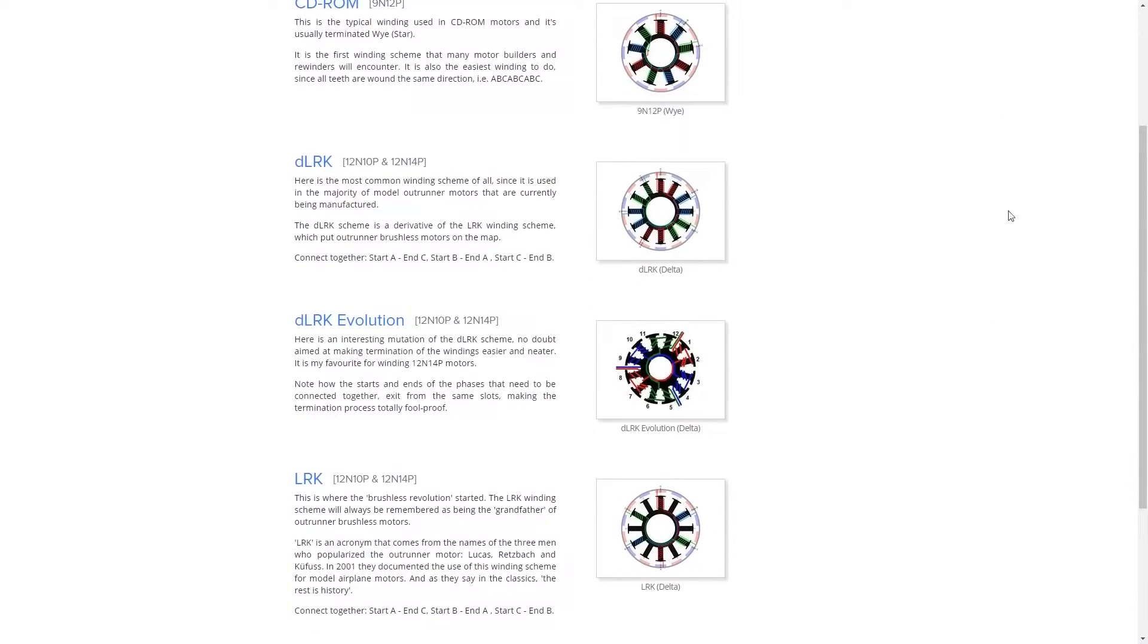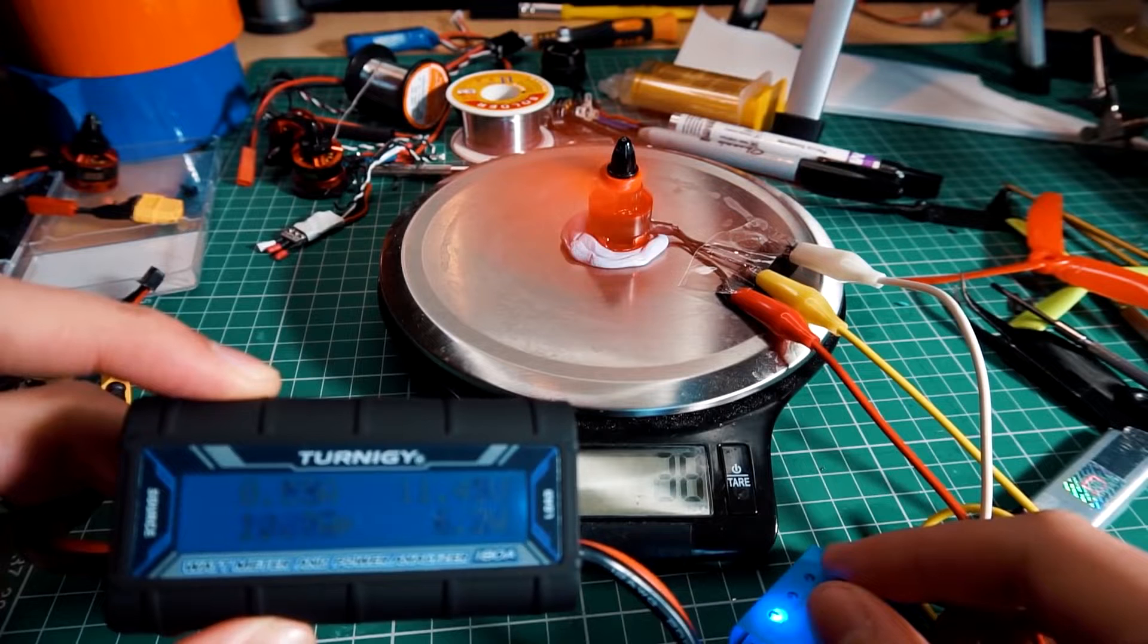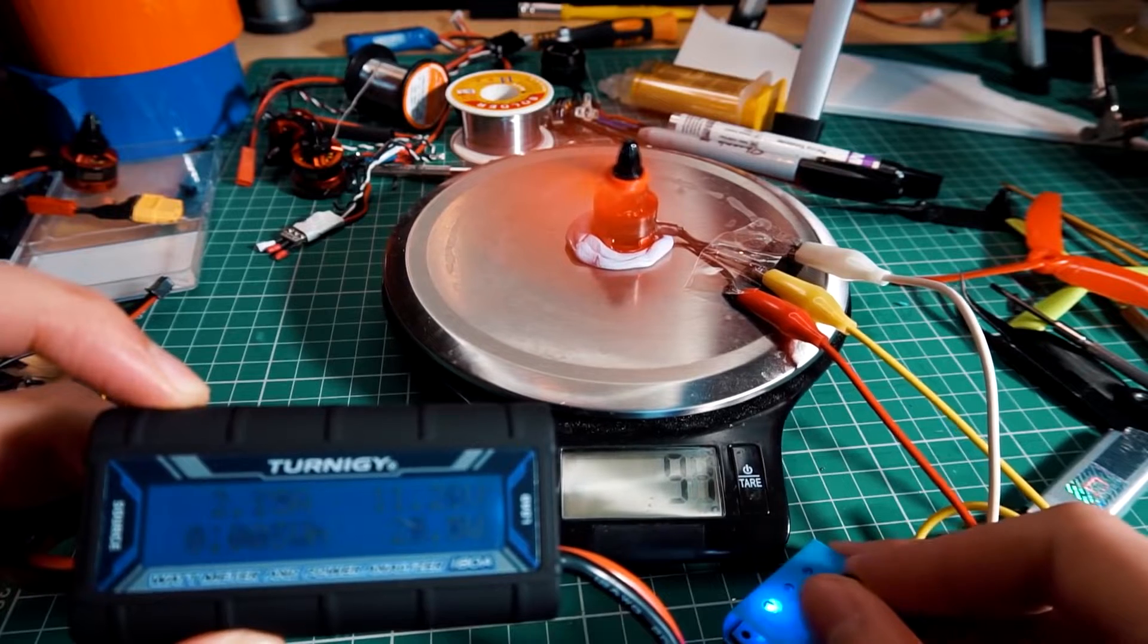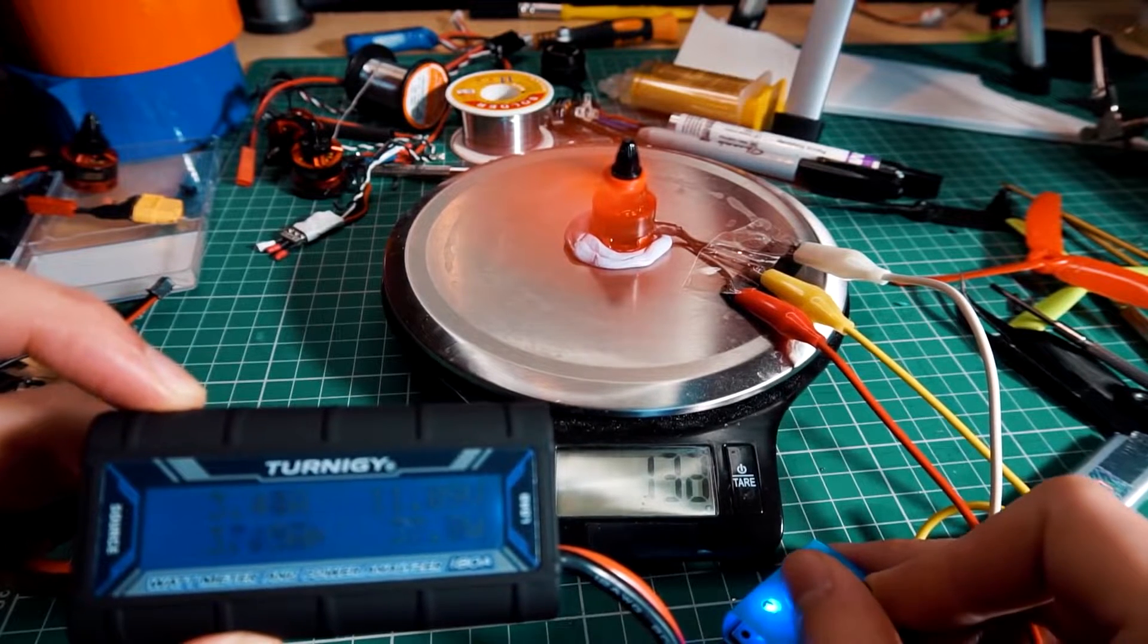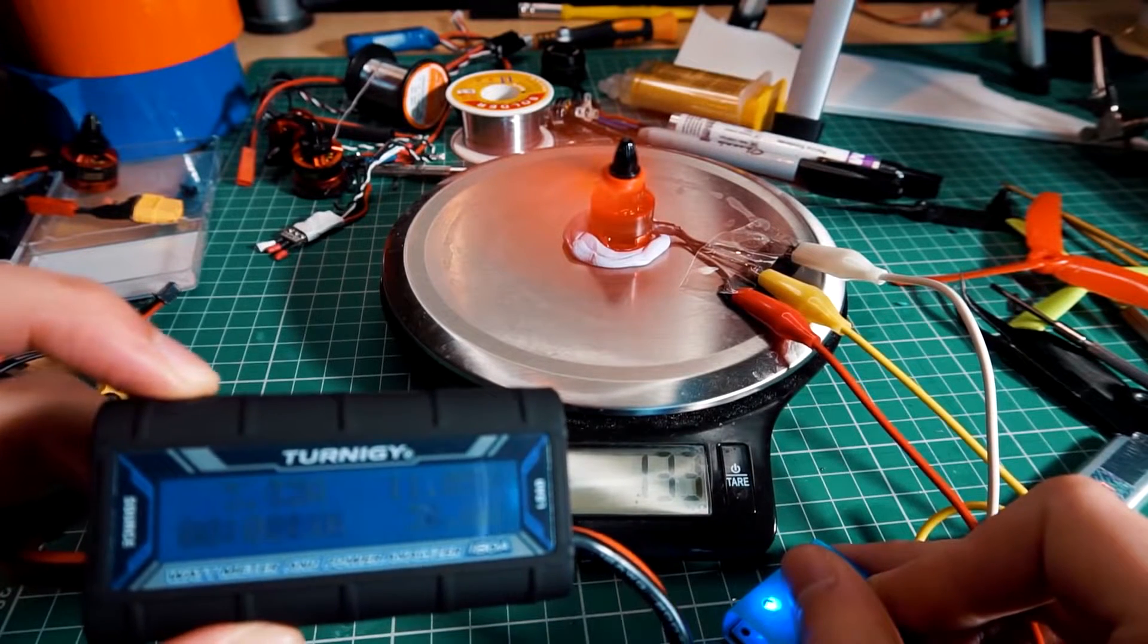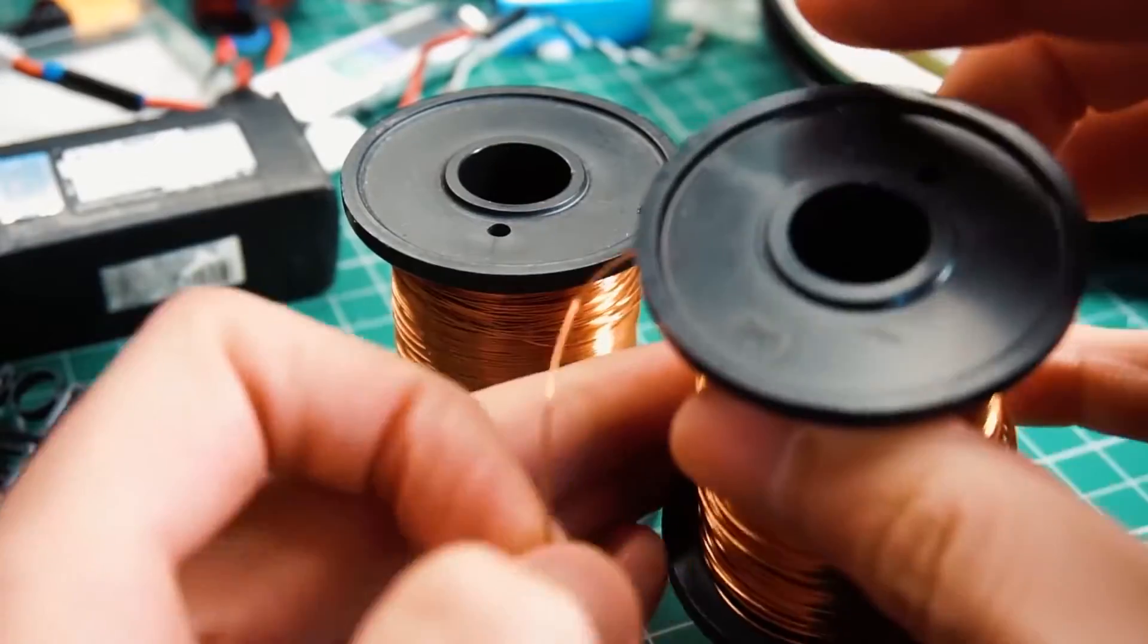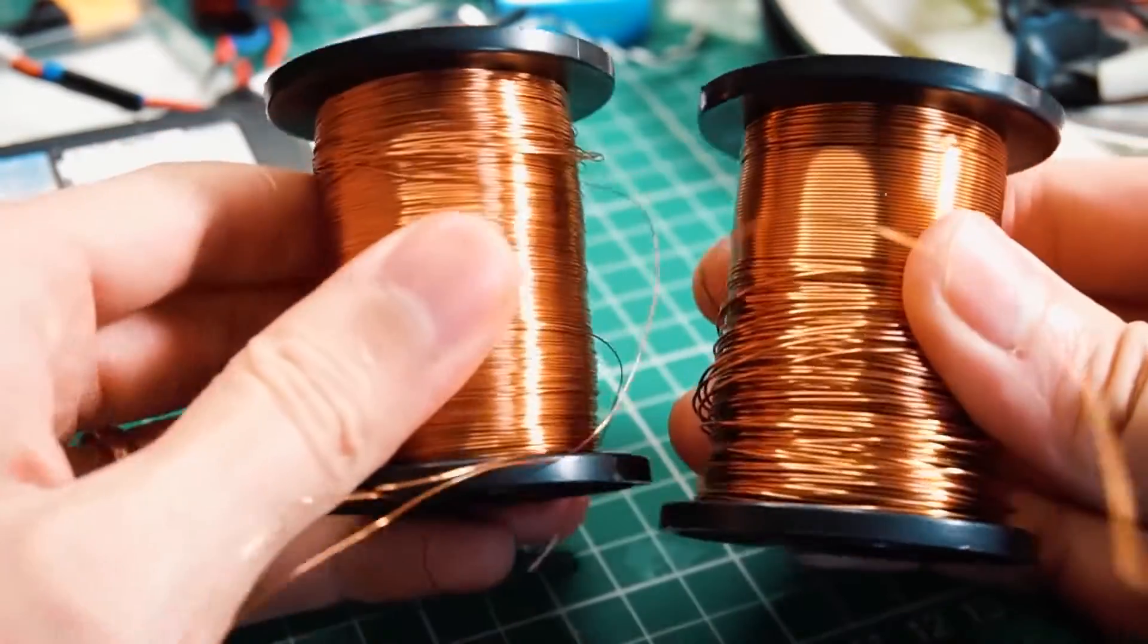Another reason why you would like to do this yourself is because the way you wind a brushless motor will define the way it will behave. I'm talking about the KV, torque, and other characteristics like the voltage it will support and amps, also depending on the copper wire you are using.